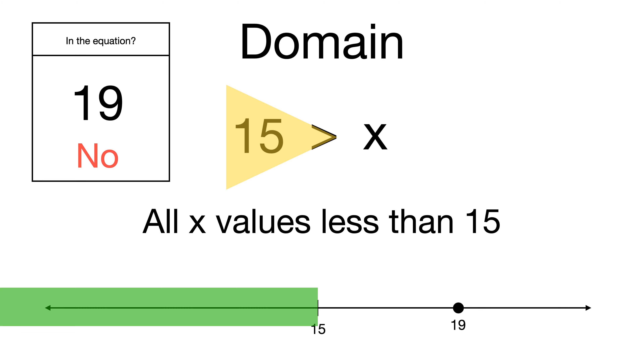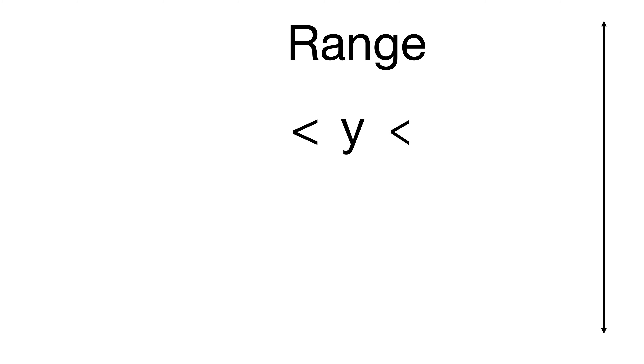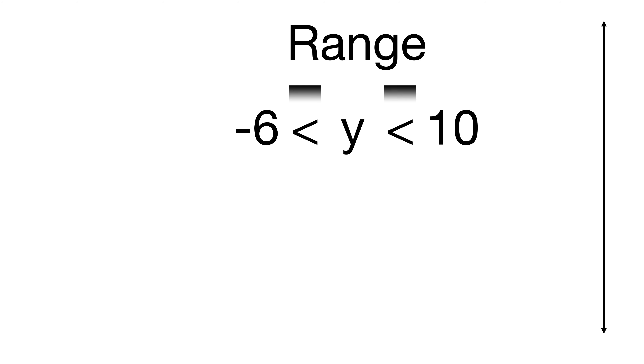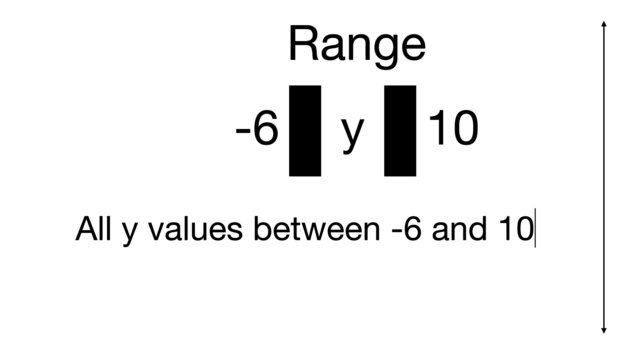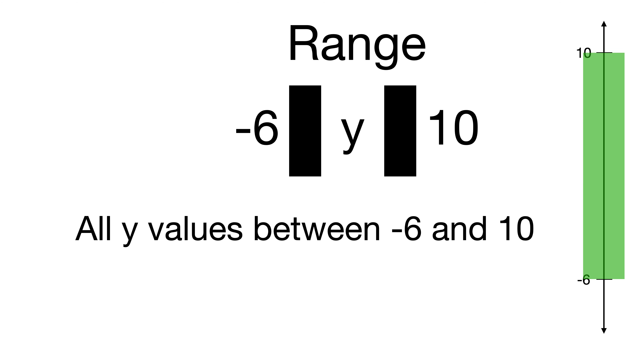Now let's look at range. The y axis goes up and down, not left to right. Range is written the same way as domain but with y instead of x. In this case, negative 6 is the small number and 10 is the big number. Cross them out if it helps — this just says the range is all y values between negative 6 and 10. On the vertical number line, the range covers all values between negative 6 and 10.